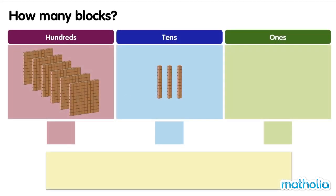How many blocks? Let's count the blocks in each place. There are six hundreds, three tens, and zero ones. To find the total number of blocks, let's add the place values of each digit.